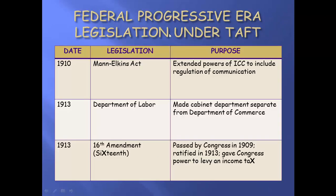If you want to take a quick peek at Taft — he is only there for four years. You have the Mann-Elkins Act giving the ICC more power, the Department of Labor to keep an eye on labor issues, and then the 16th Amendment passed by Congress in 1909, which will not be ratified until 1913 — our Congress can collect an income tax.